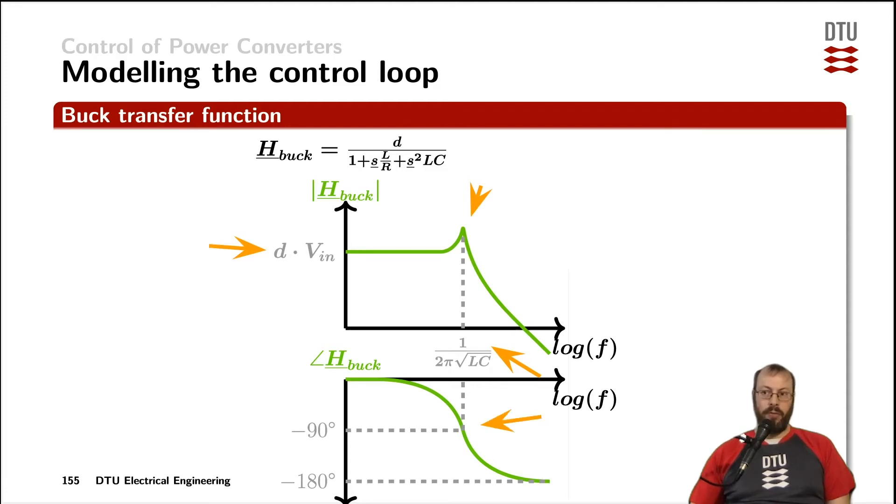Therefore the phase crosses minus 90 degrees at that point and as we have a second order filter formed by the inductor and the capacitor we end up having minus 180 degrees phase shift for the frequency approaching infinity.